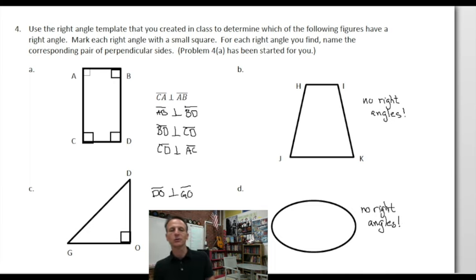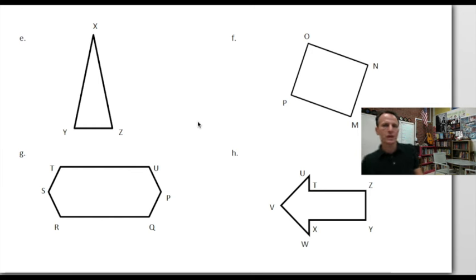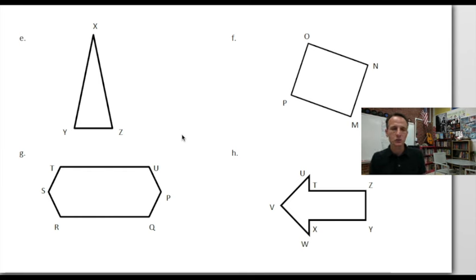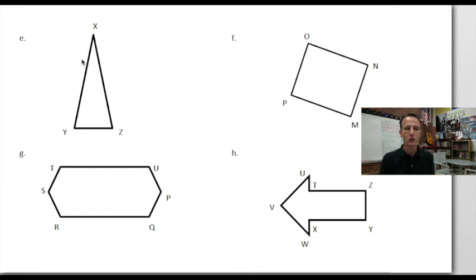Let's look at the rest of number four, E through H. We have another isosceles triangle — it would appear to have two equal sides. But this one has an acute angle here, an acute angle here, an acute angle here — it's an acute isosceles triangle. Awfully cute, isn't it? But no right angles, and that is what we will simply write here.